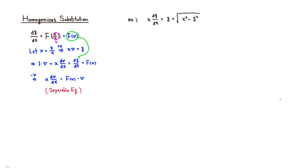The differential equation we have is x times dy/dx is equal to y plus the square root of x squared minus y squared. In this form, we can't quite see the y/x expressions, so we need to divide through by x first. We'll get dy/dx is equal to y divided by x.